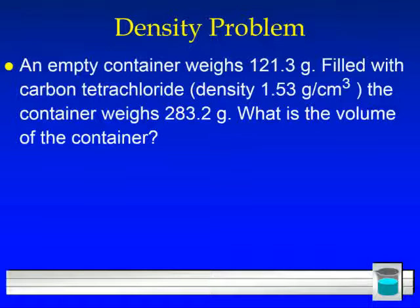So, let's look at a density problem. Let's look at an empty container weighs 121.3 grams. And it's filled with something called carbon tetrachloride. Carbon tetrachloride has a density of 1.53 grams per cubic centimeter. And the container weighs 283.2 grams. What is the volume of the container? So, I'll give you a hint. We have the mass of the empty container. With this sample of carbon tetrachloride, with that sample, it now weighs 283.2 grams. The density of the sample is 1.53 grams per cubic centimeter. What you are going to need to do is rearrange that density equation to solve for the volume of the container. Again, calculate that. Go ahead and send that answer back to me to double check.